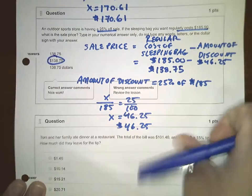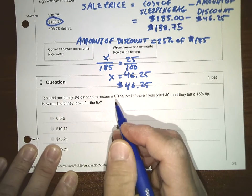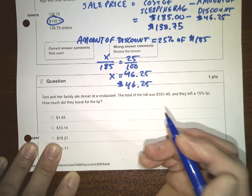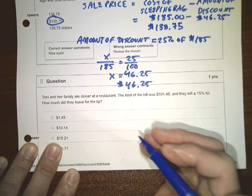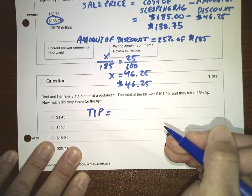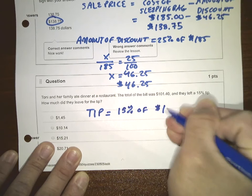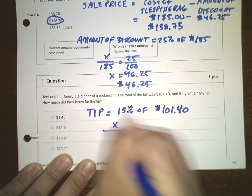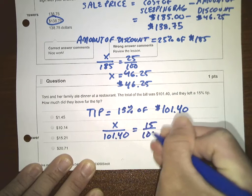What a time to be alive. Tony and her family ate dinner at a restaurant. The total of the bill was $100.40 and they left a 15% tip. How much did they leave for the tip? The tip is going to be 15% of their total bill, $101.40. That will be X out of $101.40 equals 15% out of 100.